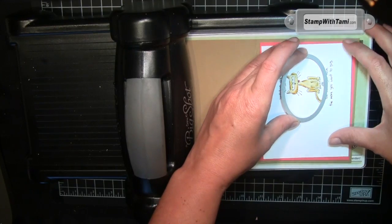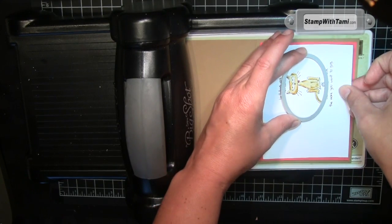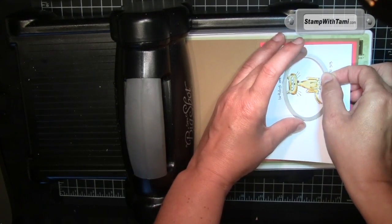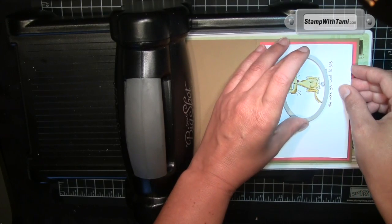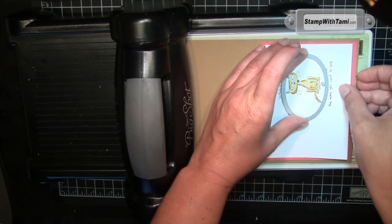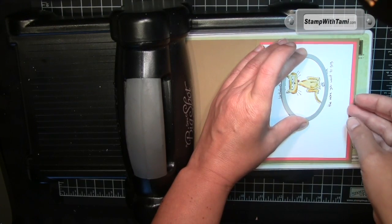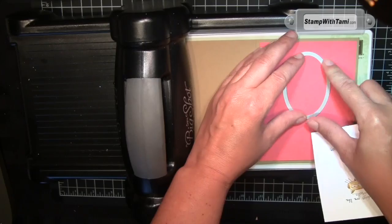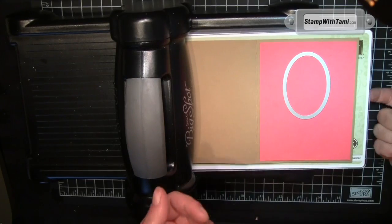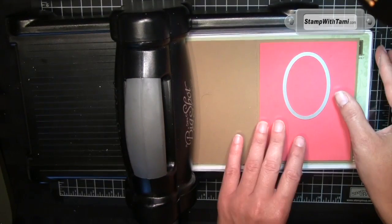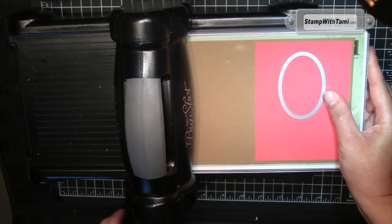I'm kind of holding it up so it doesn't pop down, and I'm just hovering over it till it's lined up. I want it lined up where it's going to be inside the card. Then I'm going to pull that out and pop that down, and now the magnet on the magnetic platform is holding it down. Second cutting pad on top and crank it through.